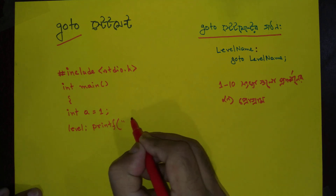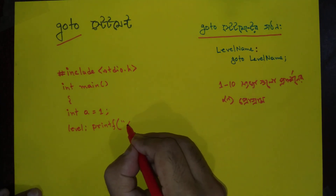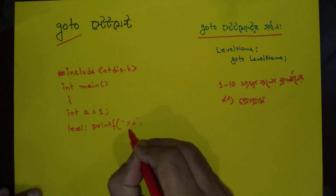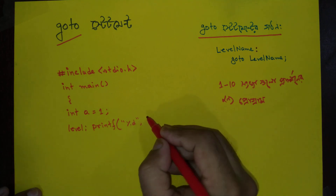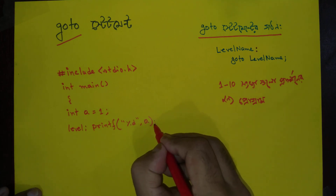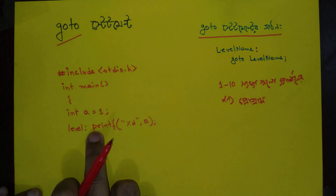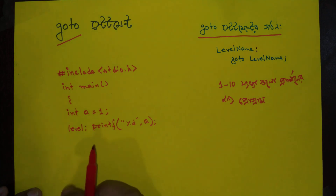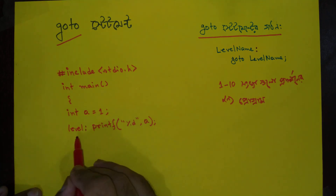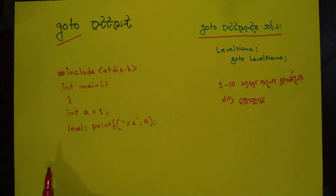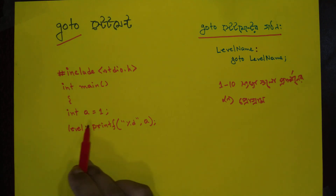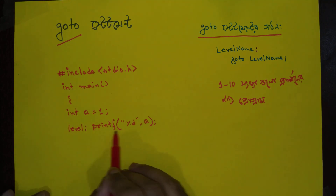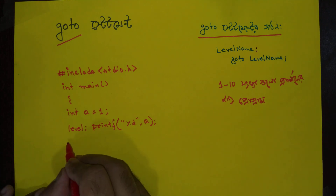PrintF, fd %d %d. And the first time we have to get the level to the level, and the level to the level. So, we have to get the level to the level.